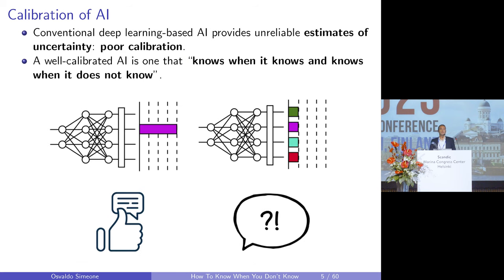We say that deep learning-based AI models are poorly calibrated. Calibration is the property of being able to provide precise measures of confidence that reflect the true accuracy of a certain decision. A well-calibrated AI model knows what it knows and knows what it doesn't know. When making a decision that is likely to be correct, the model assigns a high confidence. When making a decision close to chance, it spreads out confidence levels across multiple outputs, indicating that it doesn't know.